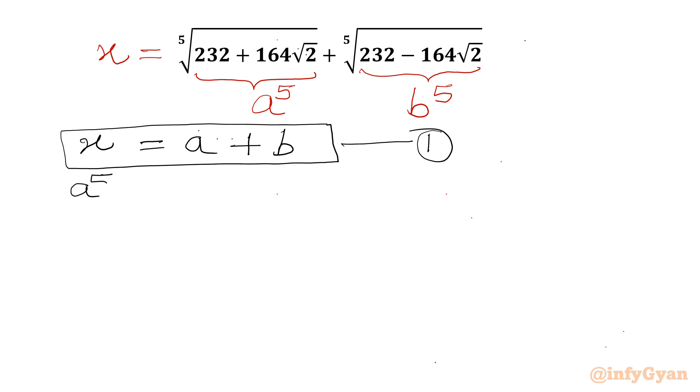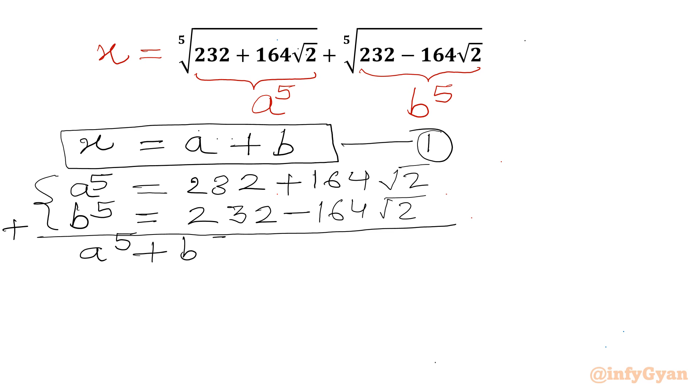Now I will write a power 5. This is equal to 232 plus 164 square root 2. And b power 5 is 232 minus 164 square root 2. Now I will add both the equations. So we can write a power 5 plus b power 5 will be equal to 464. Let's say this is our equation number 2.